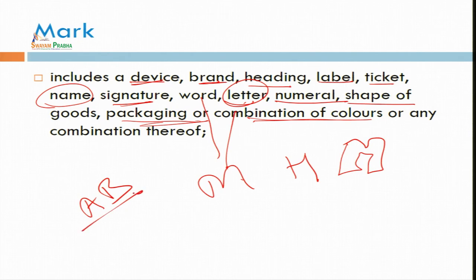Some famous name examples: Amitabh Bachchan has also registered his name 'Amitabh Bachchan' or 'AB' — no one can use 'AB' as the title or name of their company. We can also take the example of Parker Pen — the arrow on the pen cap cannot be used by any other pen company on their pen caps. That is the specific trademark of that particular company. Different marks are used by different companies for protection of their goods, so there should not be counterfeit goods in the market.